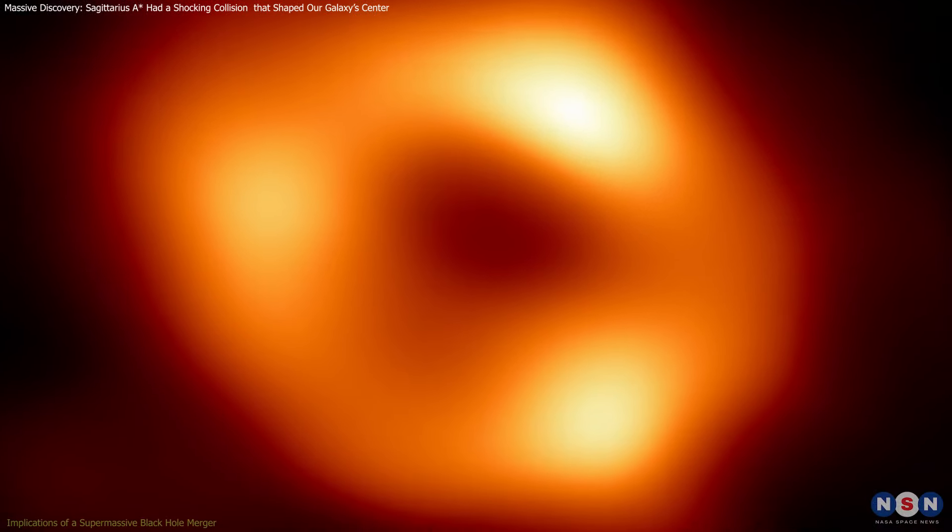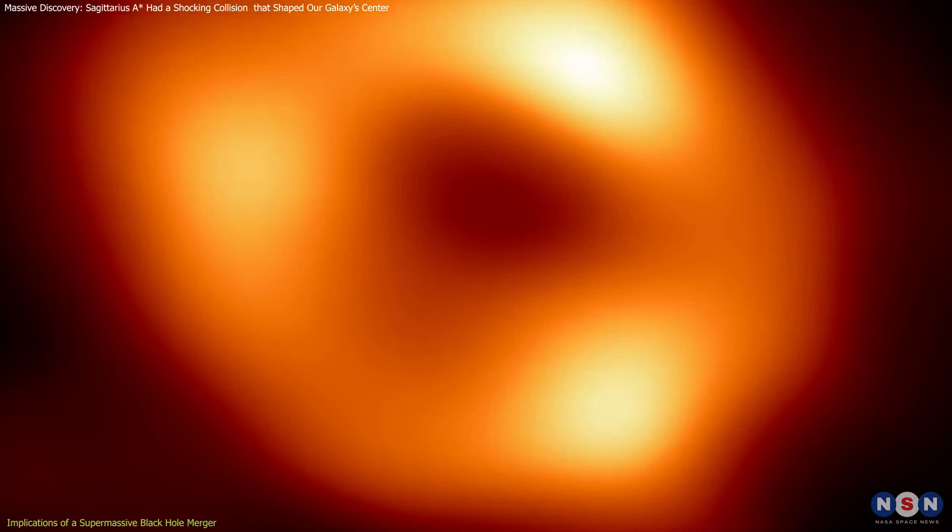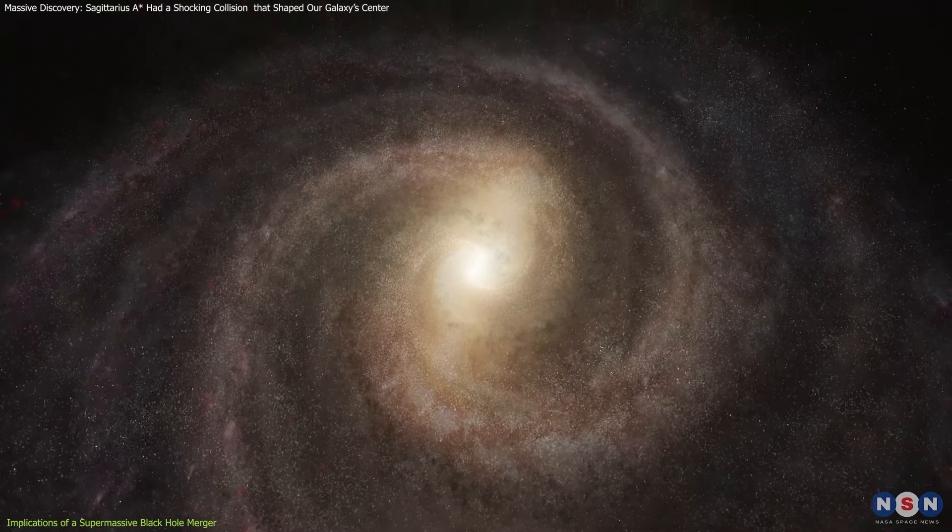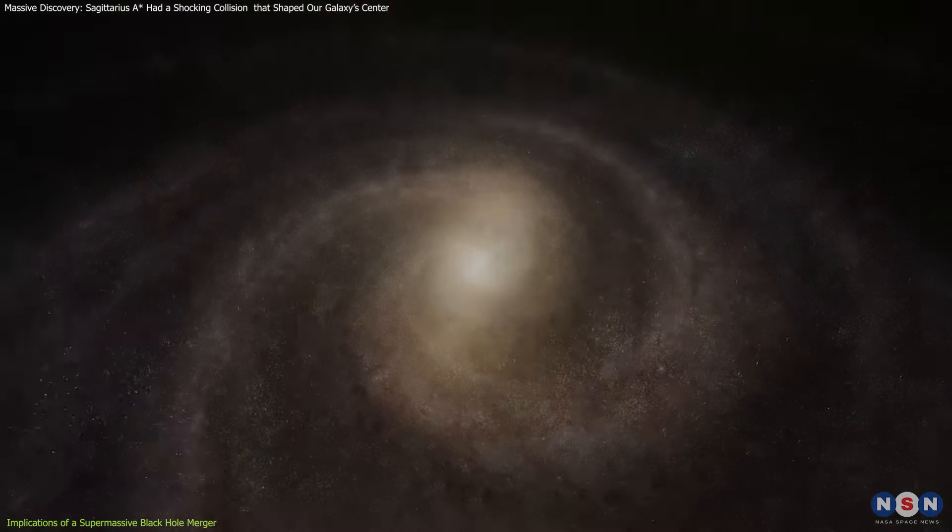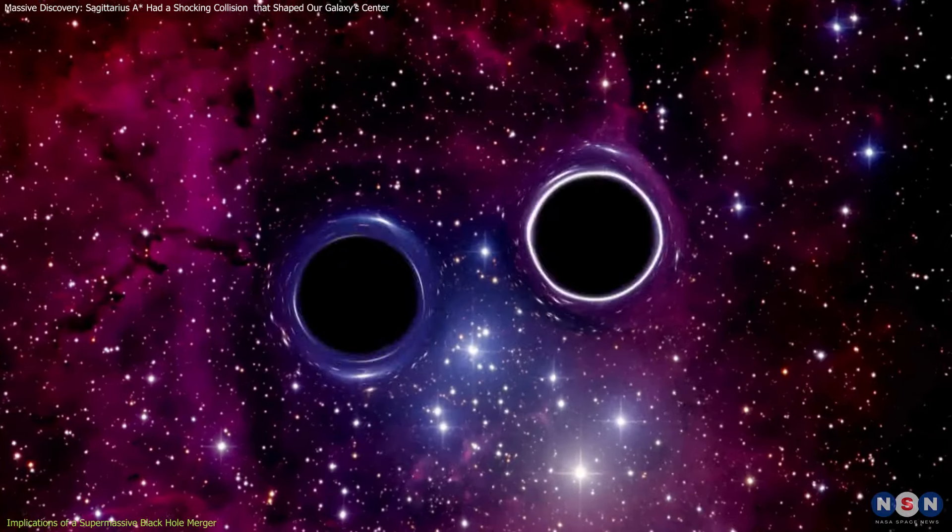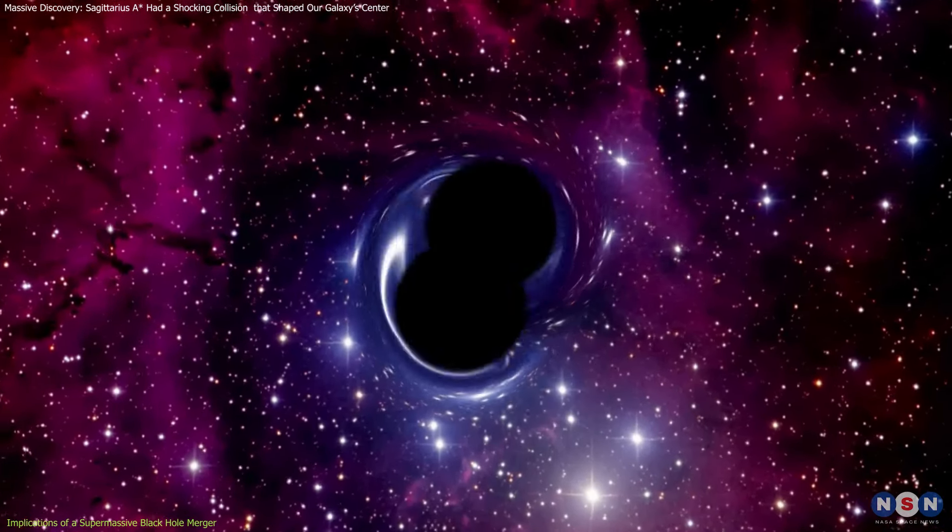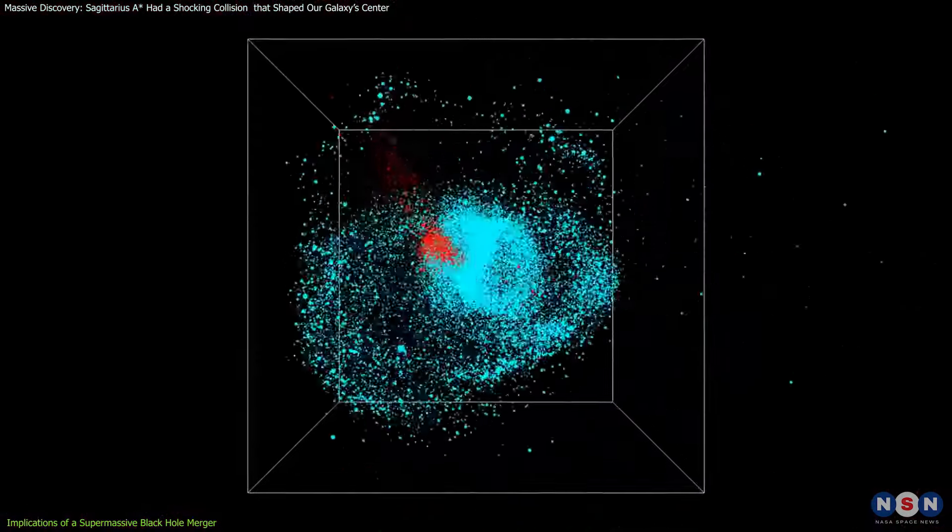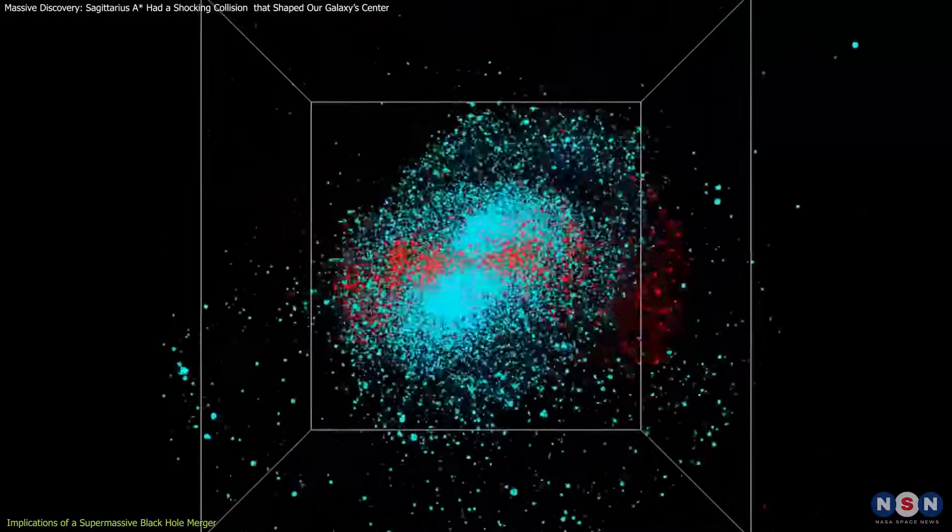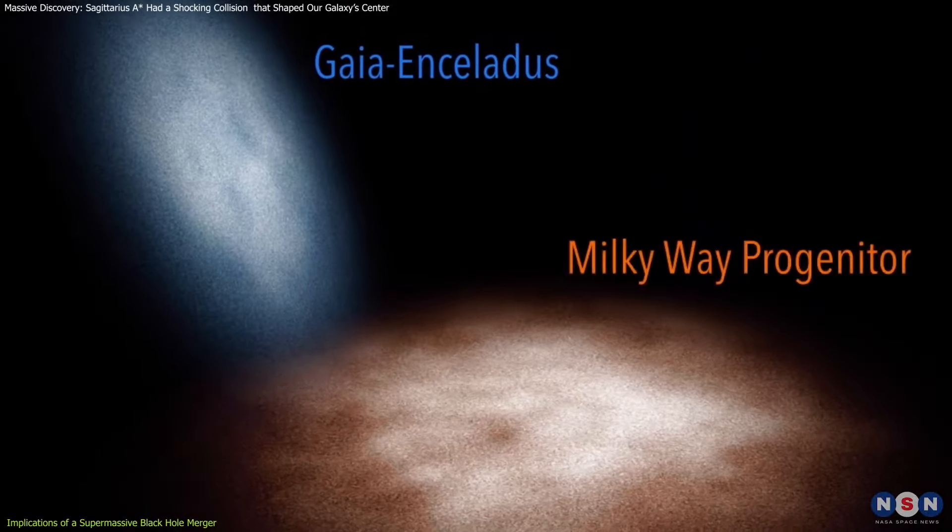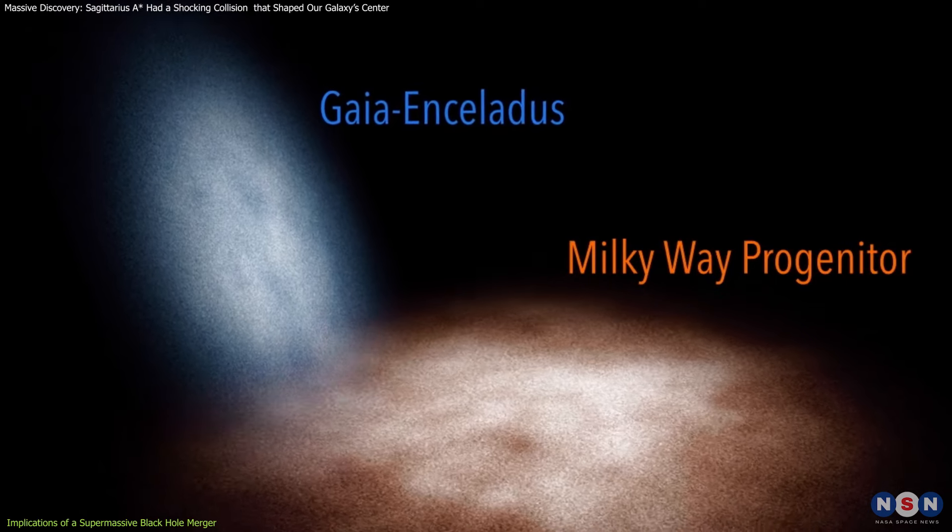If Sagittarius A-Star formed through a massive merger, it profoundly altered our understanding of the Milky Way's history. The research suggests that such a merger could have occurred around 9 billion years ago, following the Milky Way's collision with the Gaia Enceladus Galaxy, a smaller satellite galaxy that itself brought its own black hole.